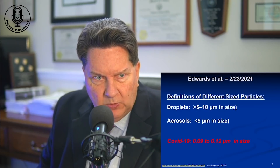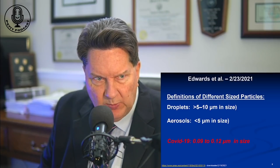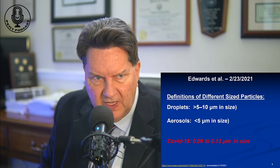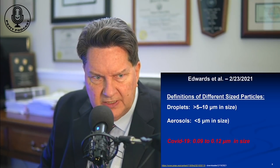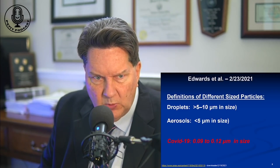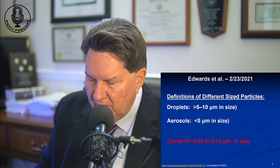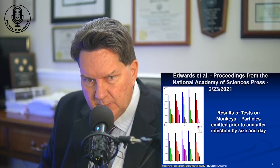Edwards and others have defined the sizes of different particles: droplets being greater than five to ten microns, whereas aerosols are five microns or less. Appreciate that COVID is on the order of 0.1 microns — somewhere between 0.09 and 0.12 microns — although I've seen literature recently that says it's as low as 0.05 microns. Edwards did an interesting study, and I'm going to break it down into smaller bite-sized bits.